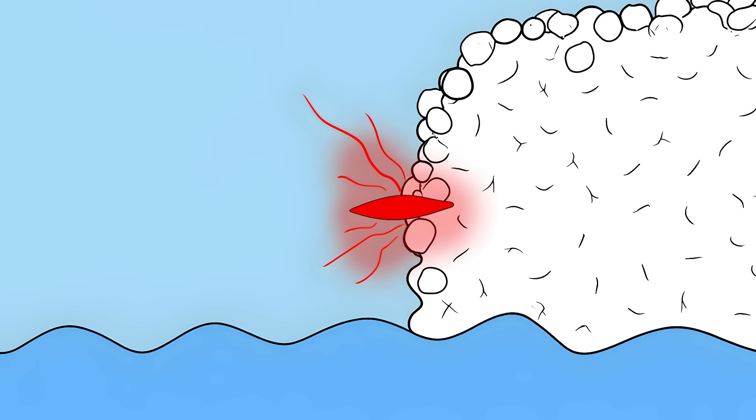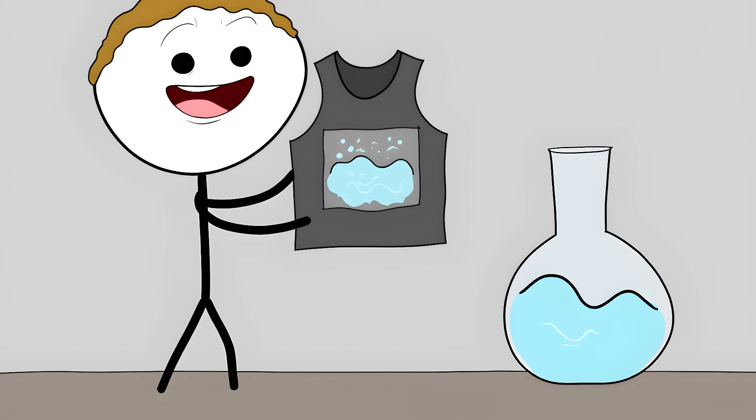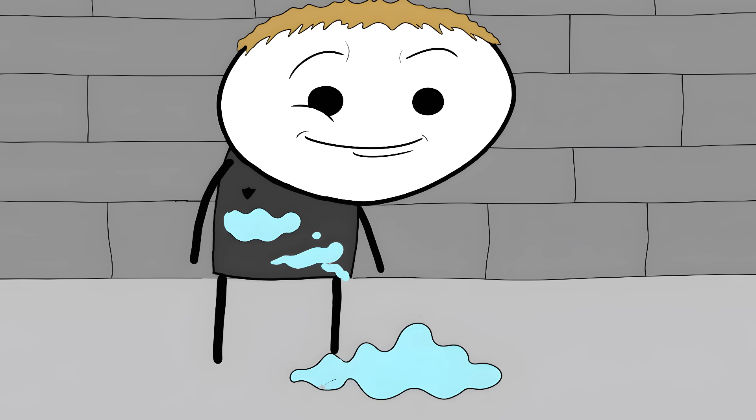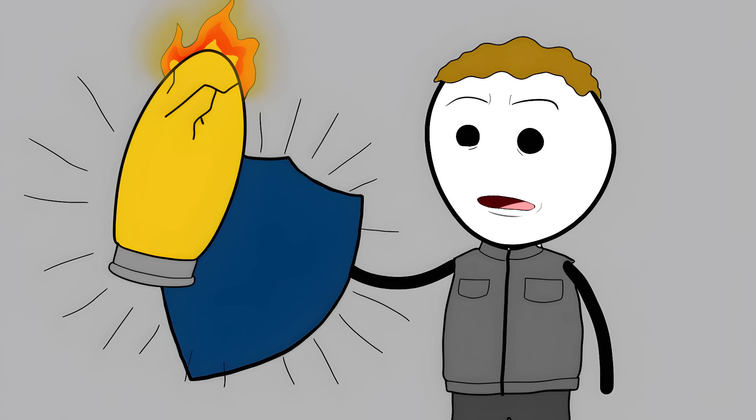Scientists are using this to create liquid body armor. A bulletproof vest filled with this fluid stays soft and flexible, but when a bullet hits it, the fluid instantly turns into a solid shield stopping the bullet. It's a liquid that becomes a solid just long enough to save your life.